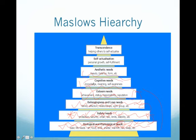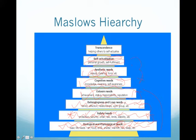Beyond cognitive needs are aesthetic needs — beauty, balance, and form — then self-actualization: personal growth and self-fulfillment. At this point, you pretty much have the keys to the castle. Transcendence involves helping others to self-actualize. Most employees we see problems with are stuck around the lower tiers, working back and forth between tier two and tier three — as soon as they get up a little bit, they get knocked back down.